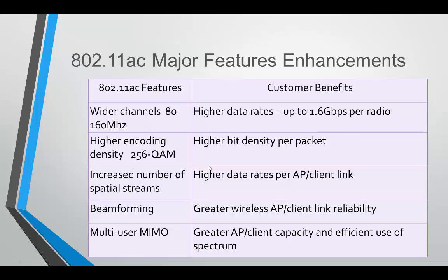Take a look at the chart showing 802.11ac major features and enhancements. We have much higher data rates, wider channels from 80 to 160 MHz, data rates up to 1.6 gigabits per radio, a different encoding technique — 256-QAM providing higher bits per packet — an increased number of spatial streams, beamforming, and multi-user MIMO. All of these technologies really take 802.11ac to a higher level.